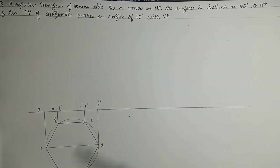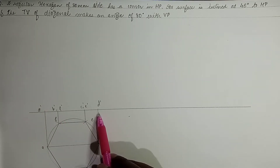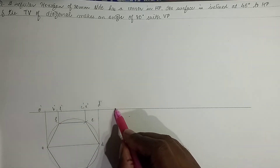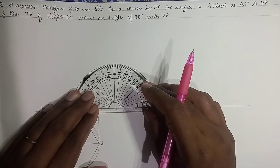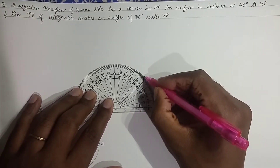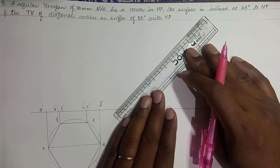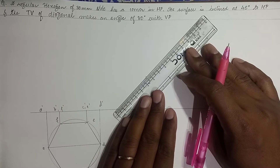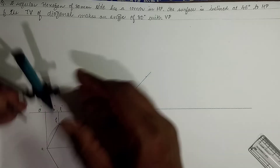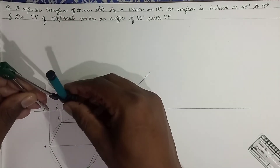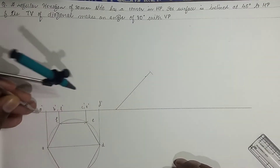Now in the second stage, we are given that the surface is inclined at 45 degrees to HP. So take a comfortable distance, mark a point, and draw an angle at 45 degrees to HP. Draw the line with the help of a ruler scale. Picking up this distance from the front view with the compass, we mark the point.